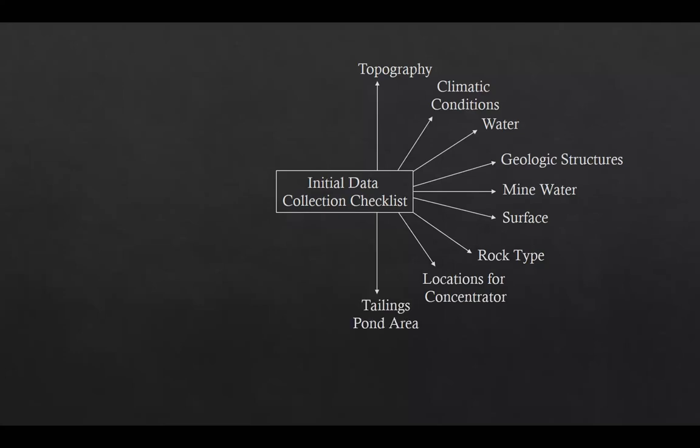The next item is tailings pond area, covering the location, type and effects of the tailings pond on the local area. Another item is land ownership — who is the current owner, the current use and price of the land, and whether it should be purchased or acquired on lease. The next item is power, including availability of power in the area, power lines to the site, substation location and possibility of power generation at the site.